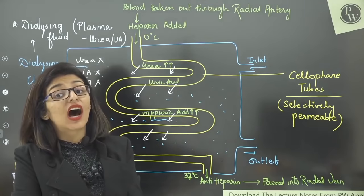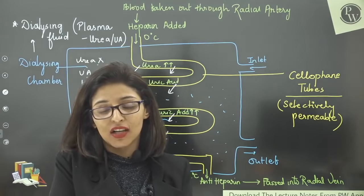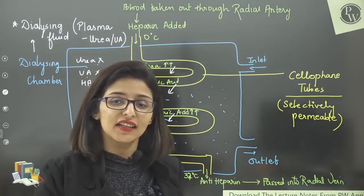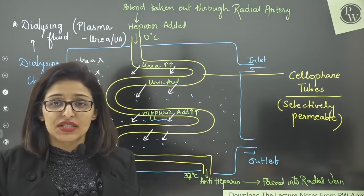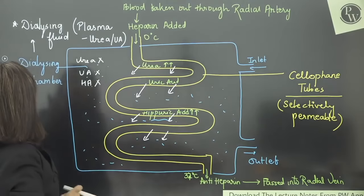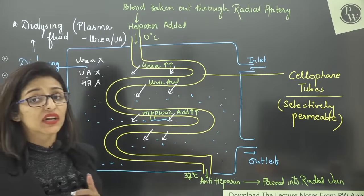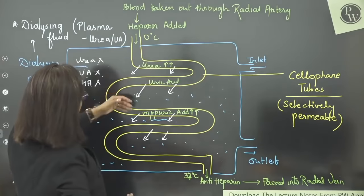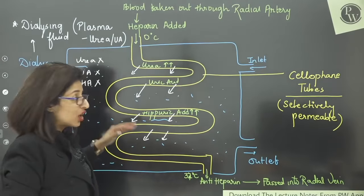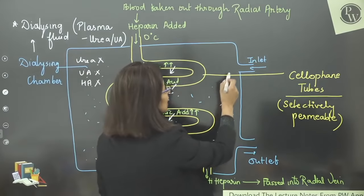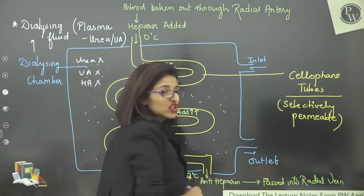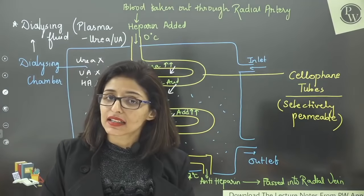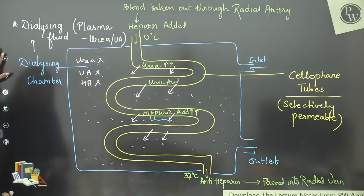Blood is returned through the vein because veins always carry blood toward the heart. So the clean blood goes to the heart, and the heart pumps it to the whole body — free of nitrogenous waste. This is how the artificial kidney protects us when our own kidney fails. Also, because urea will accumulate in the dialyzing fluid over time and could cause backflow, we need to keep changing and refreshing the hemodialyzing fluid continuously. Now, let's start with the rock and roll with NCRT!